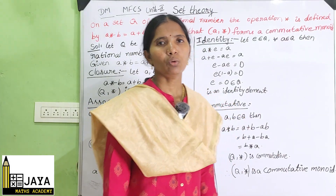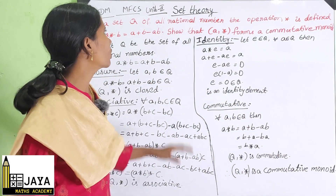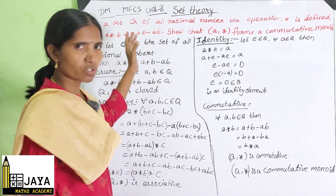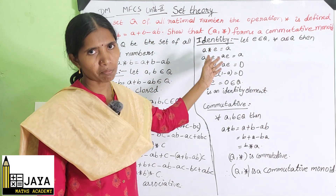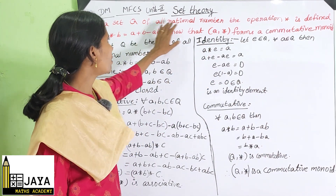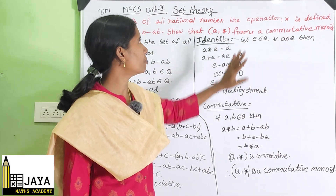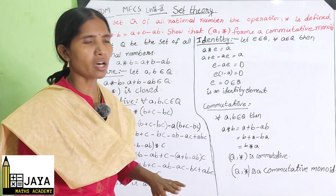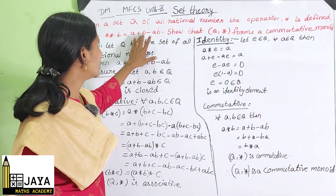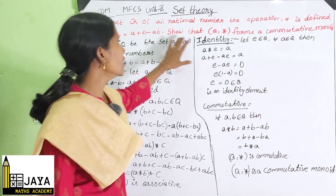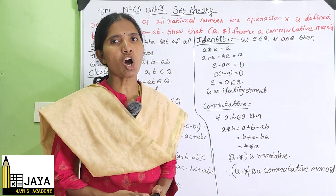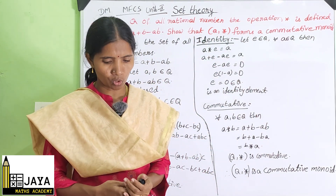Welcome to Jaya Maths. Today our topic is one of the important problems in set theory algebraic structures. On a set Q of all rational numbers, the operation star is defined by A★B = A + B − AB, such that (Q, ★) forms a commutative monoid.